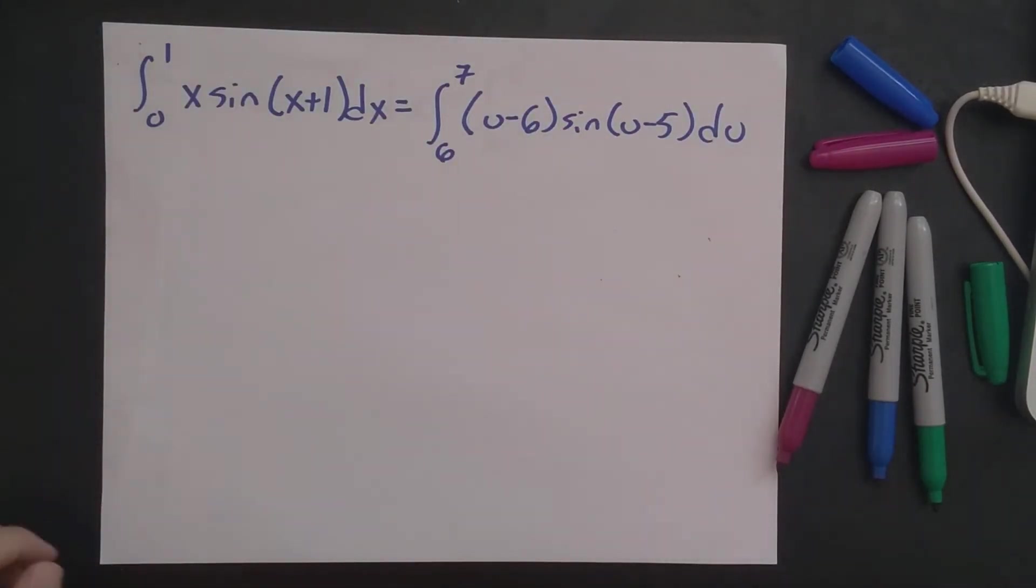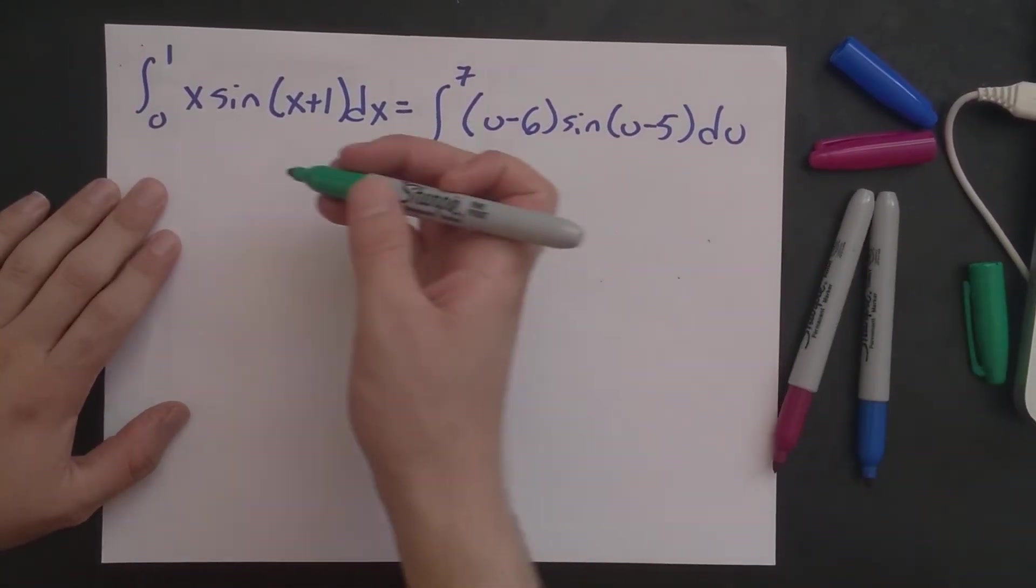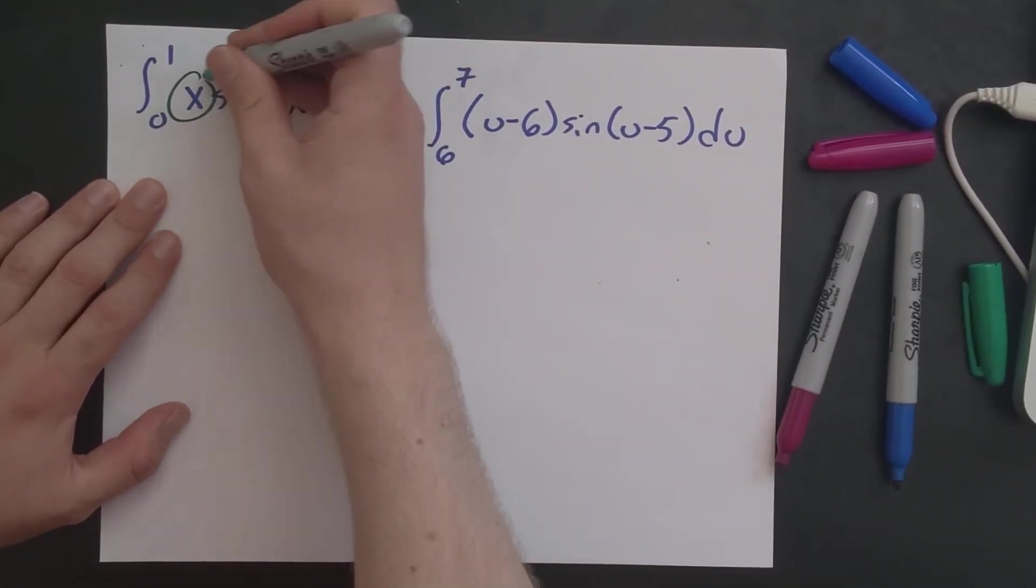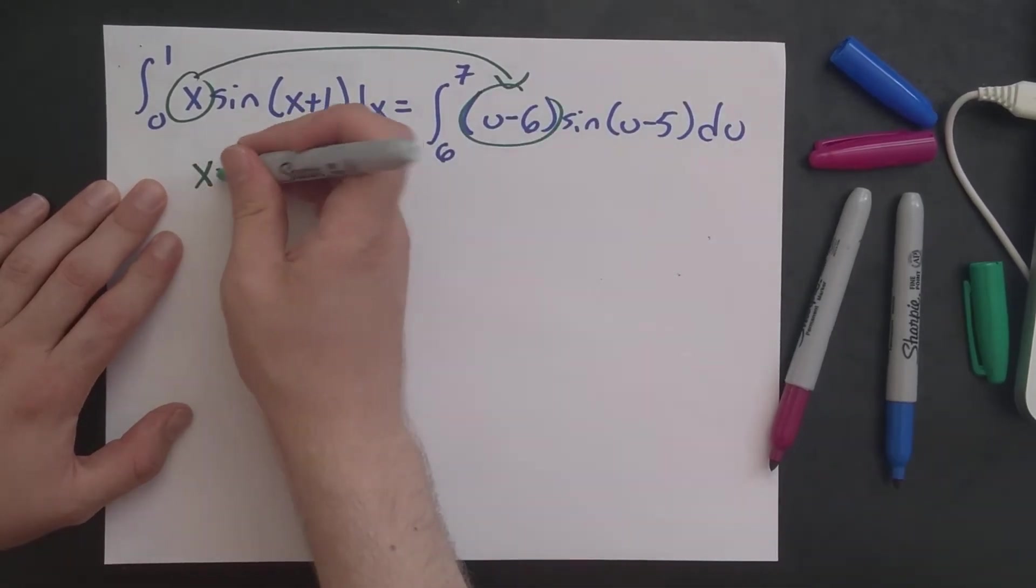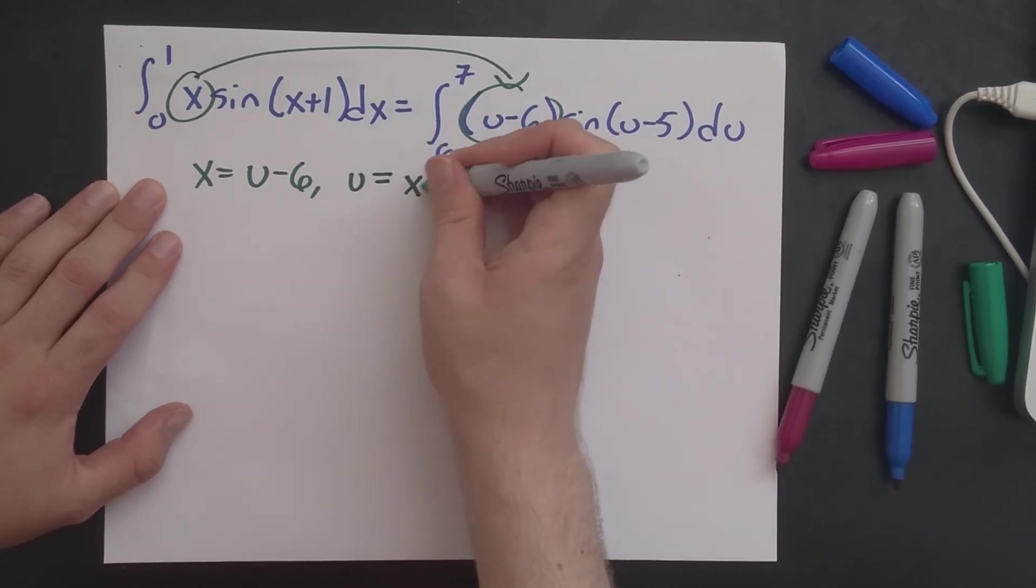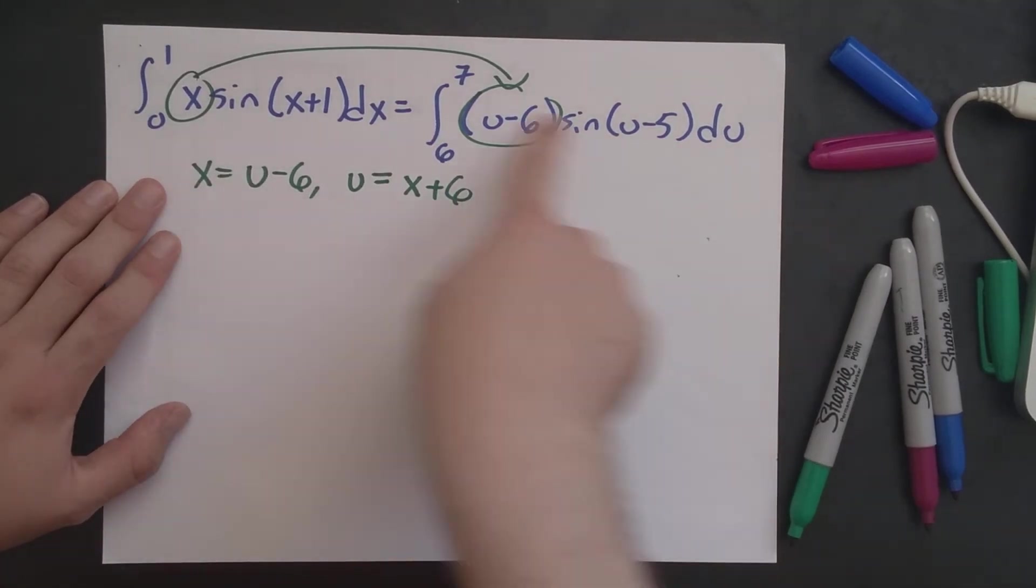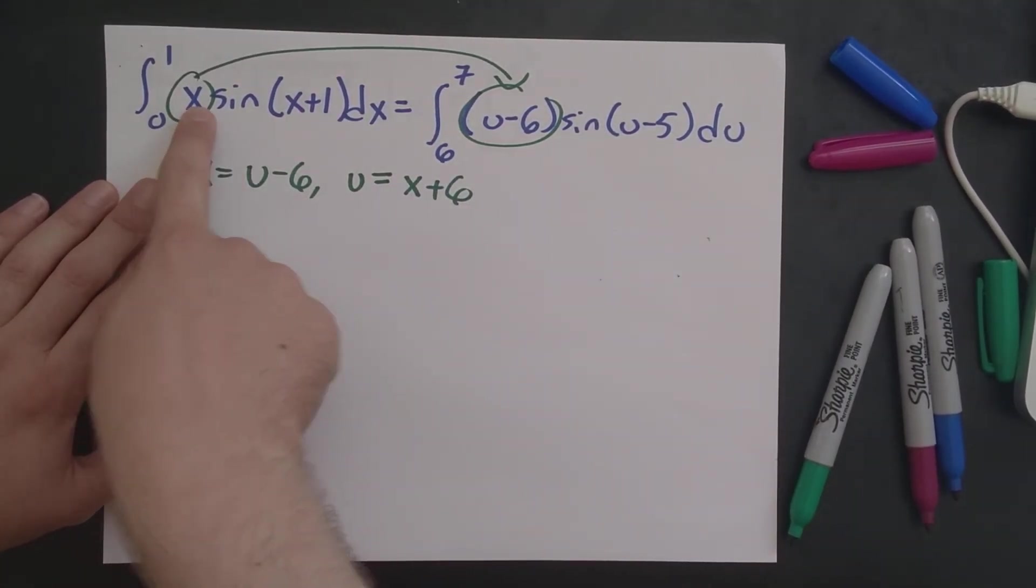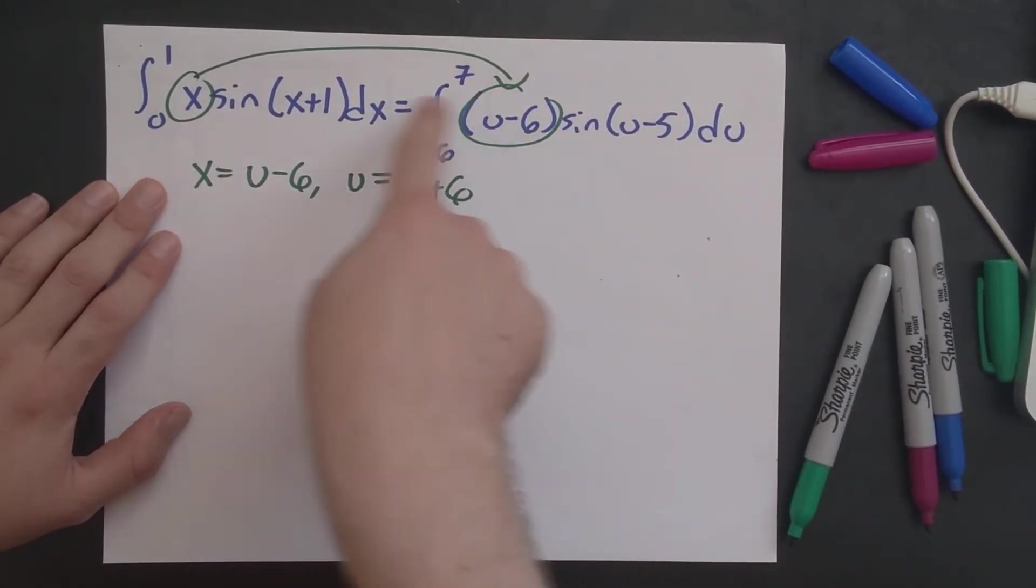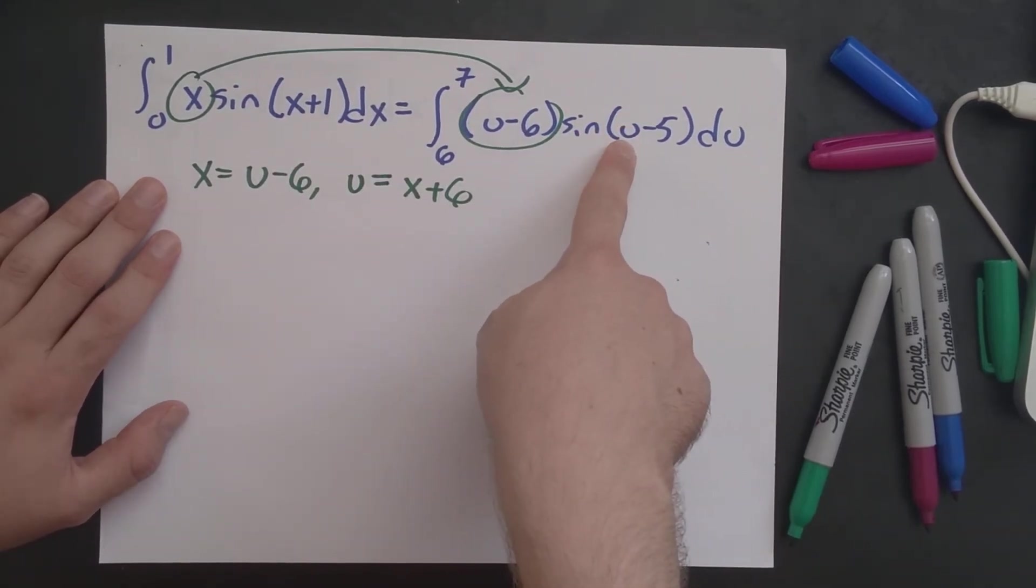Okay, so then the next one came from this problem where I basically was asking, has a mistake been made in this substitution? And so if we kind of compare things here, x is getting replaced with u minus 6, which is equivalent to saying u is equal to x plus 6. And once we have that idea, we can see that everything here checks out. We replace x with u minus 6. x plus 1 is u minus 6 plus 1, which is u minus 5, so that checks out.